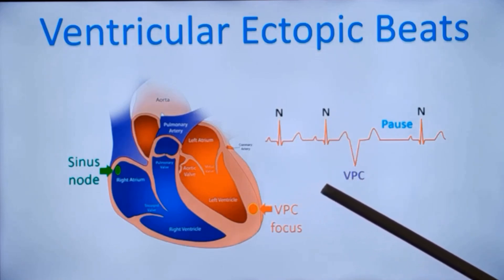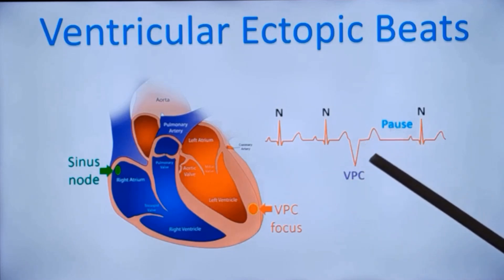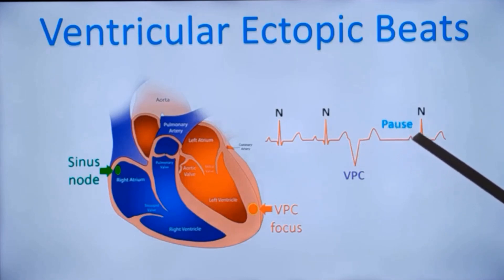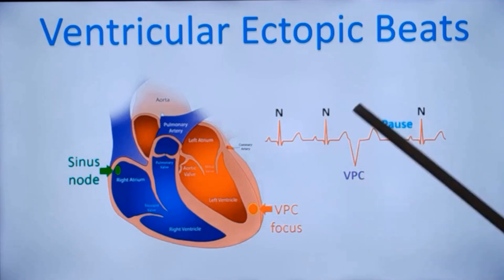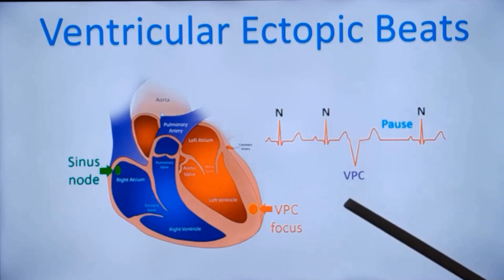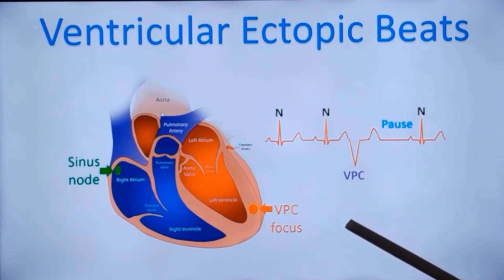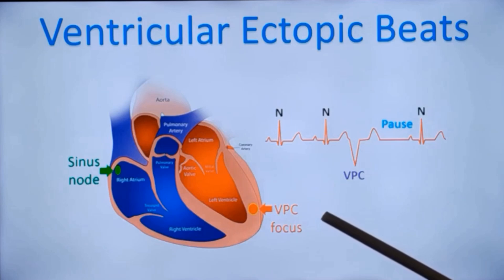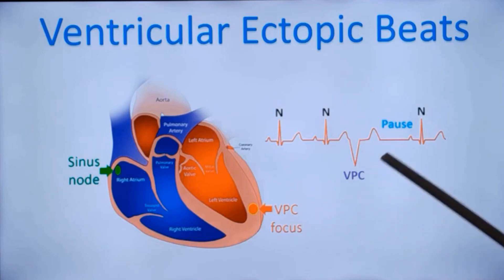In the case of an atrial ectopic, the pause will be less than compensated, so the next sinus beat will come earlier. That is because an atrial ectopic from the upper part gets conducted back to the sinus node and resets the sinus cycle, so the sinus cycle restarts again earlier. That's why you have a less than fully compensated pause for an atrial or supraventricular ectopic, while for a ventricular ectopic it is a fully compensated one.